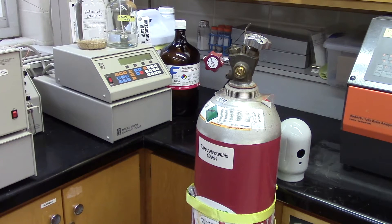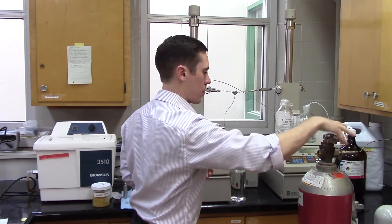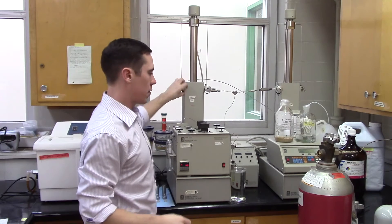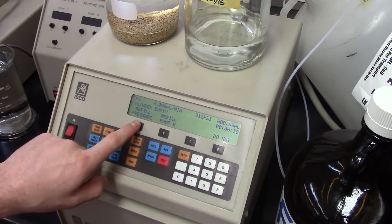The next step is to add your liquid CO2 to pump A. Fill pump A, open the cylinder, and the inlet valve. On the control panel, press refill, pump A.